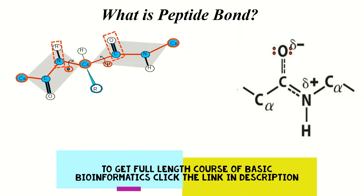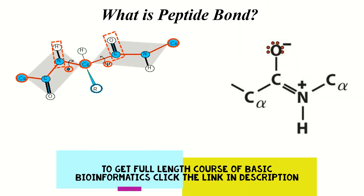As you can see in the diagram, the double bond between carbon and oxygen may shift between carbon and nitrogen, and similarly it can resonate back. Therefore, there may be a double bond-like character in a peptide bond. Hopefully, this phenomenon is now clear.